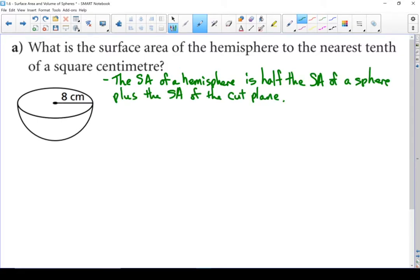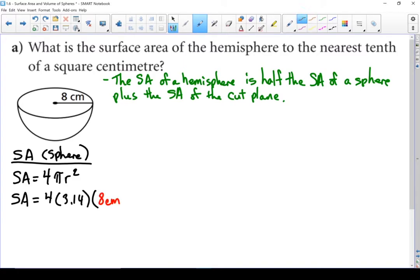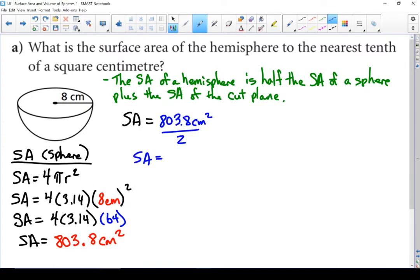Let's start with the surface area of the sphere. Write the formula down. Next let's put what we know in. And then let's calculate it. Now since we are dealing with a hemisphere, I'm going to have to take that surface area of a sphere and divide it by two. And that leaves me with 401.9 square centimeters.